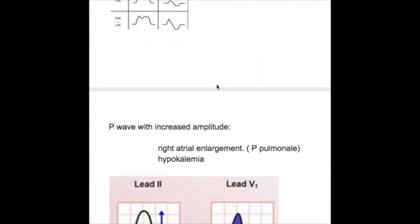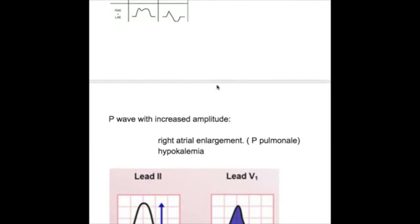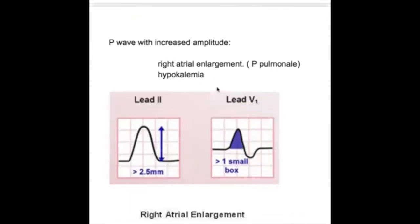One can have a P wave with increased amplitude. P wave, if it is more than 2.5 millimeters in lead 2 or the limb leads, or more than one small box in lead 1, it's right atrial enlargement or P pulmonale.